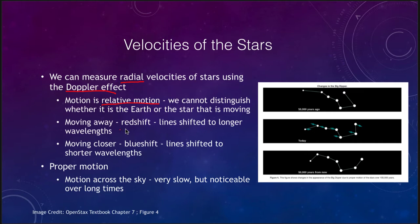If we are moving away, that gives us a red shift — the lines are shifted towards longer wavelength. If they're moving closer together, we get a blue shift where the lines are shifted to shorter wavelengths. That's the radial velocity we can see and measure using the Doppler effect.